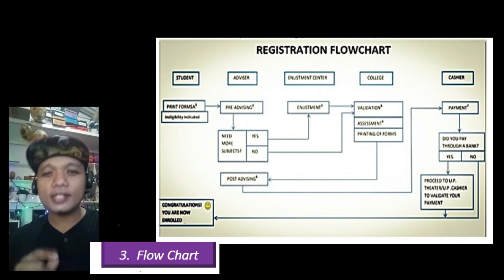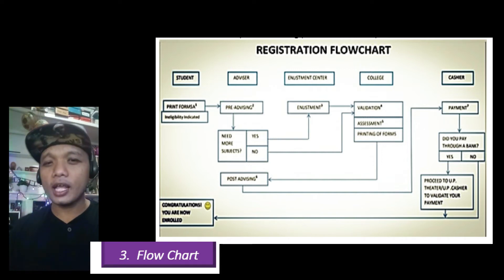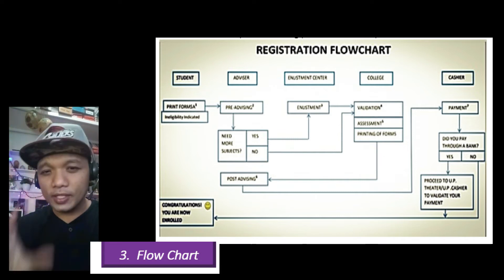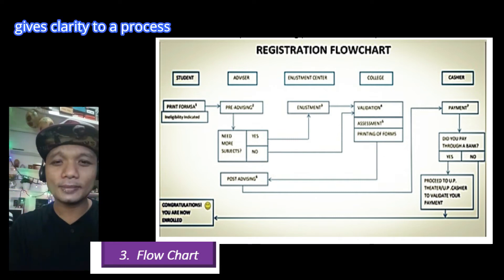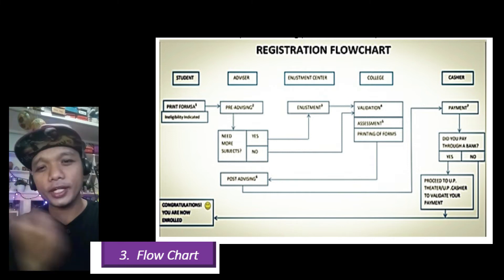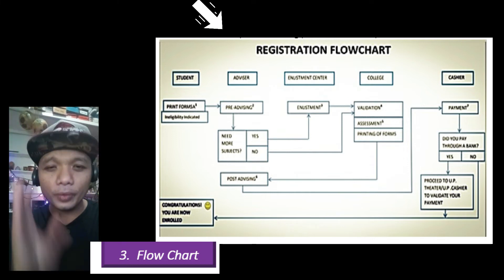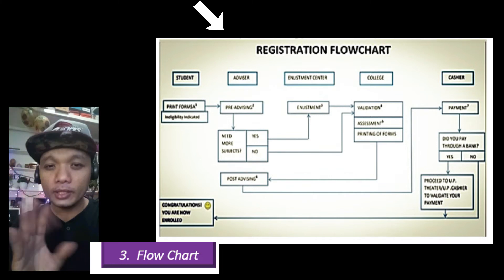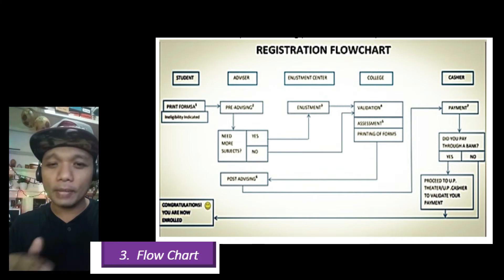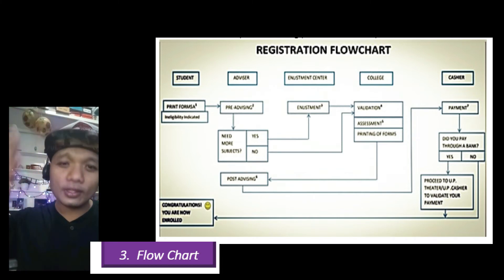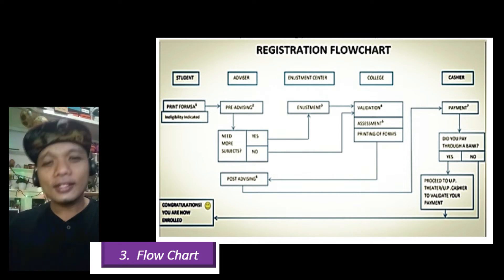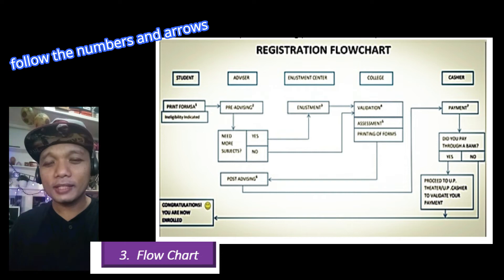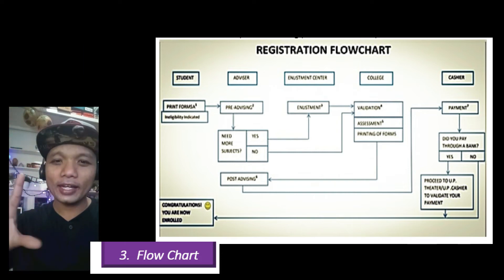The Flow Diagram is a diagram that shows procedure. It gives clarity to a process. Here is an example of a flow chart — this one is about enrollment in UPD. With this posted at the enrollment center of the College of Education, unnecessary questions and confusion about information are avoided, because the process is already laid out there. You just need to read it and follow it step by step.